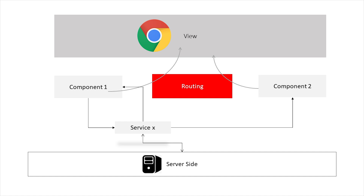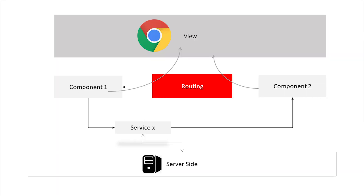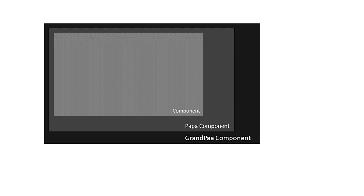The view load is not dependent on the server response but on the availability of the component. You can have components already loaded in your application and then based on the routing pattern you can load and hide components from the view. The component is a representative of data and other operations to the view, so if the component is available it will load the view immediately. Angular router gives us the flexibility to manage each view more efficiently and elegantly.